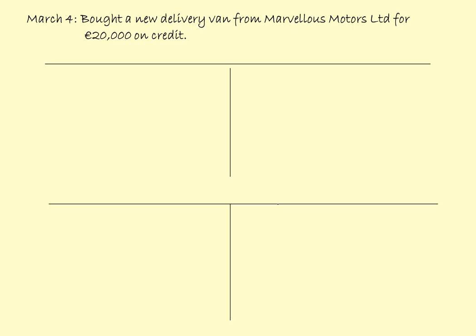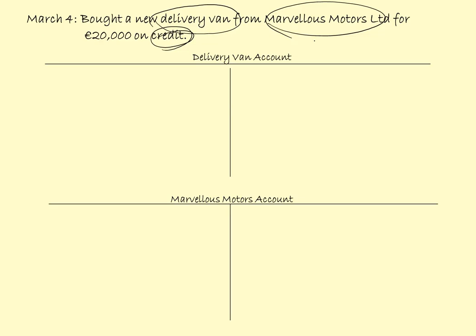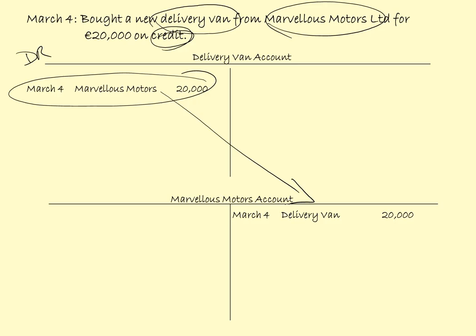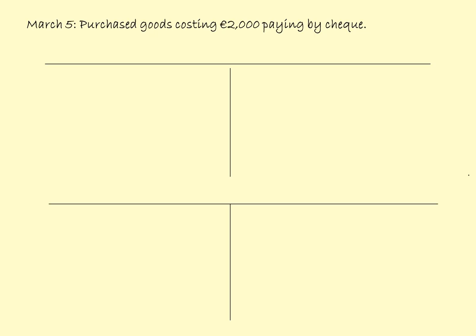March the 4th: bought a new delivery van from Marvelous Motors for 20,000 on credit. So we need a new asset account for the delivery van and an account for Marvelous Motors. The delivery van is an asset — new assets are debited. So on the debit side of the delivery van account: March the 4th, Marvelous Motors, 20,000. And we double enter that onto the credit side of Marvelous Motors account, as Marvelous Motors are creditors — hence the balance is on the credit side.